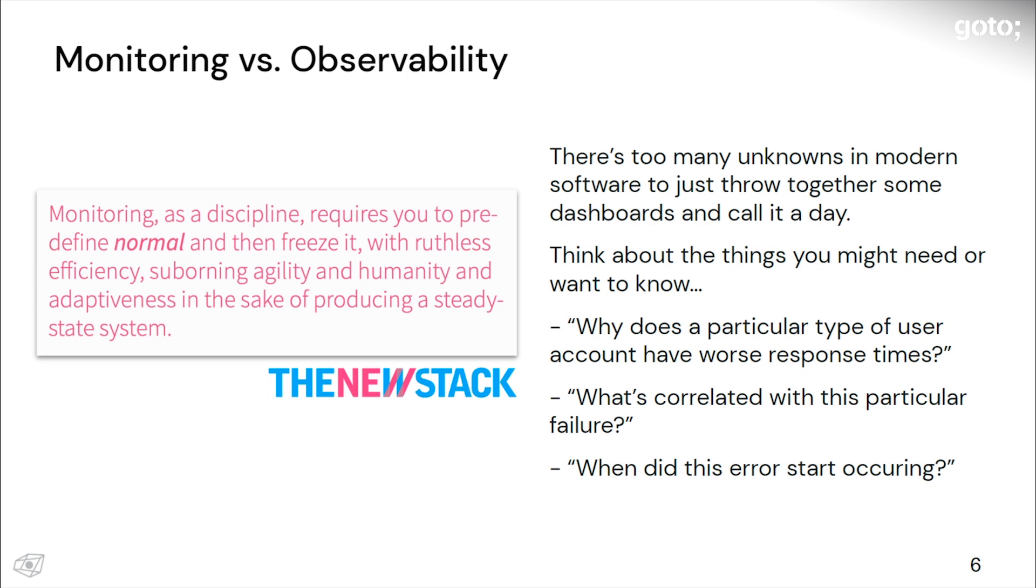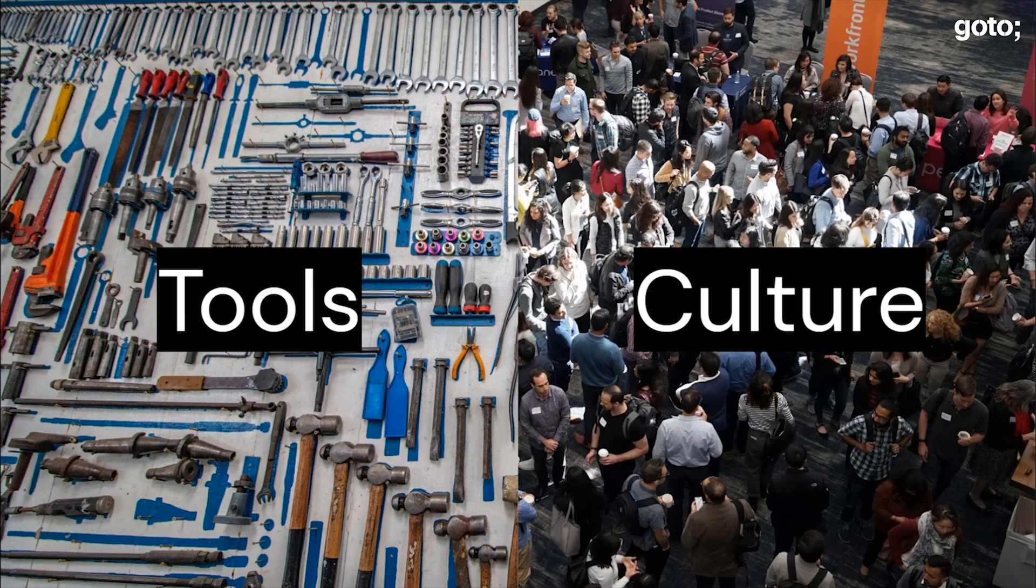Observability is really interested in helping you answer the questions that aren't normal—the unknown unknowns as we like to call them. Things like: for user X with condition Y at time Z, why is performance worse for them? These are questions that monitoring can struggle with because monitoring is really interested in looking at things like how much memory am I using right now, is that more or less than yesterday, how long does it take for this service to respond to some health check. Those are all interesting factoids, but I don't think they are going to help you actually understand your system overall.